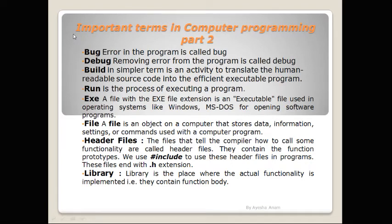The next term is Header Files. These files are used to tell the compiler how to call some functions, and they are called header files. These files contain the function prototype — which is information about a function: its name, its return data type, and its parameters. They also contain the data types and constants used with the libraries. In C language, we use hash include to use these header files in programs, and this file ends with the dot-h extension.